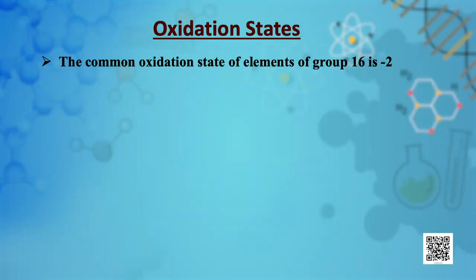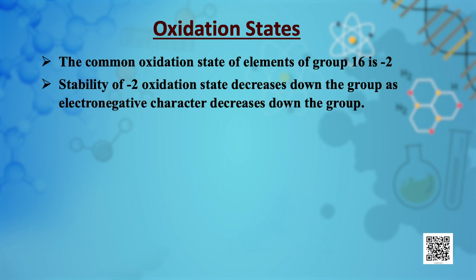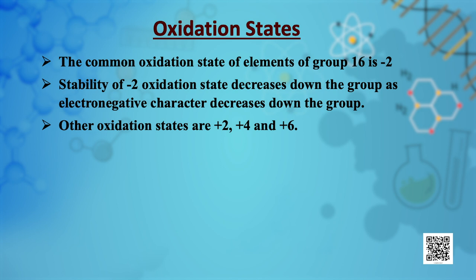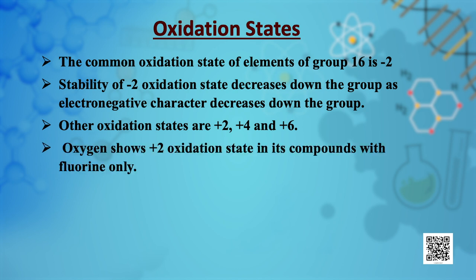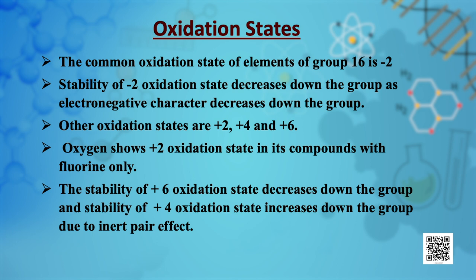The common oxidation state of elements of group 16 is −2. The stability of the −2 oxidation state decreases down the group as electronegativity decreases. Other oxidation states are +2, +4 and +6. Oxygen shows the +2 oxidation state in its compounds with fluorine only. The stability of the +6 oxidation state decreases down the group while the stability of the +4 oxidation state increases down the group due to the inert pair effect.